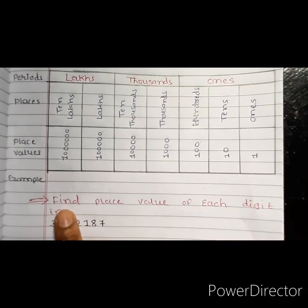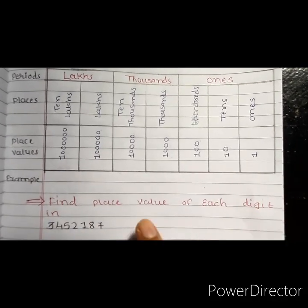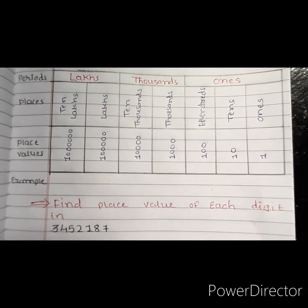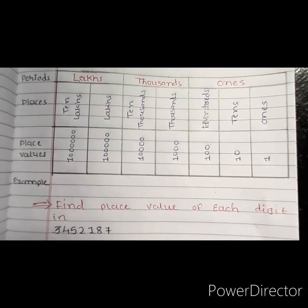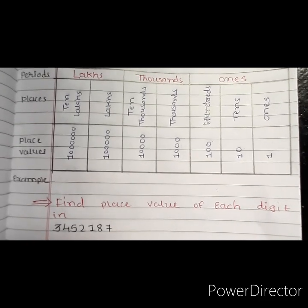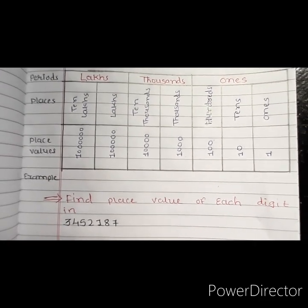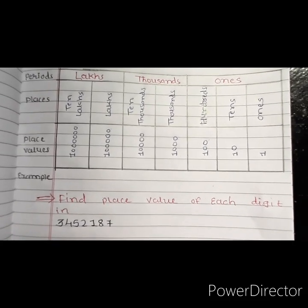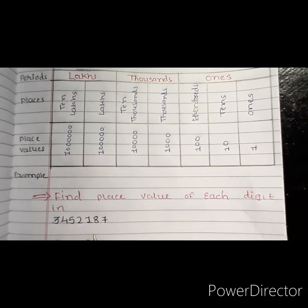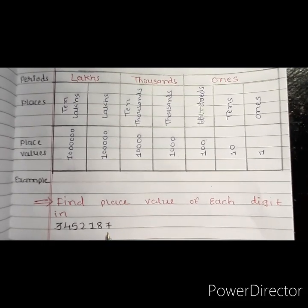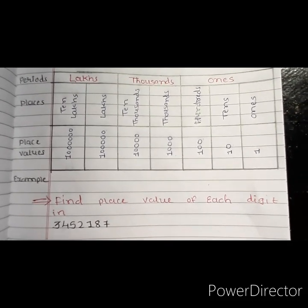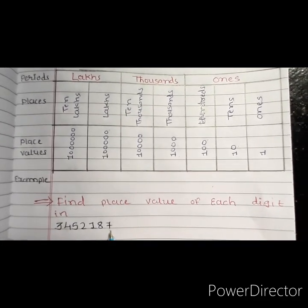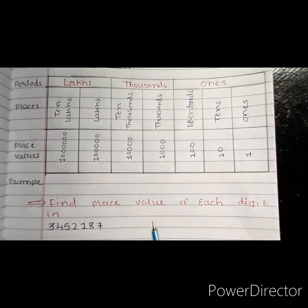So here I have written: find the place value of each digit. So how can we find the place value of any digit? For that, you have to first place each and every digit in the place value chart. Now the question is: from which side do you start entering the digits? Remember, always start from the right side. So in this large number, the rightmost digit is 7. So you have to start from 7.